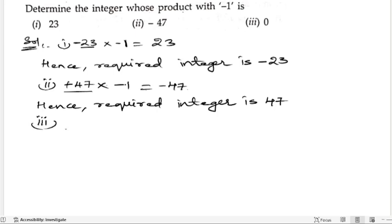What should be multiplied with minus 1 to get 0? We know that it is 0, because when we multiply 0 with any number we get 0. Hence, the required integer is 0.